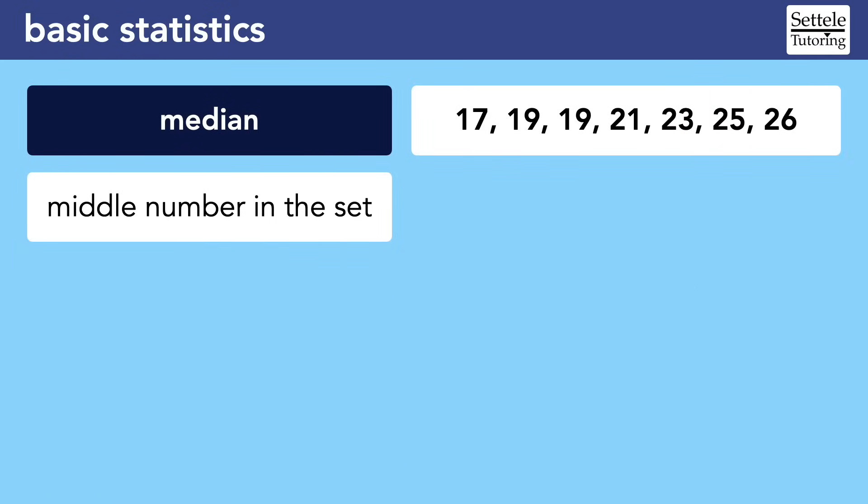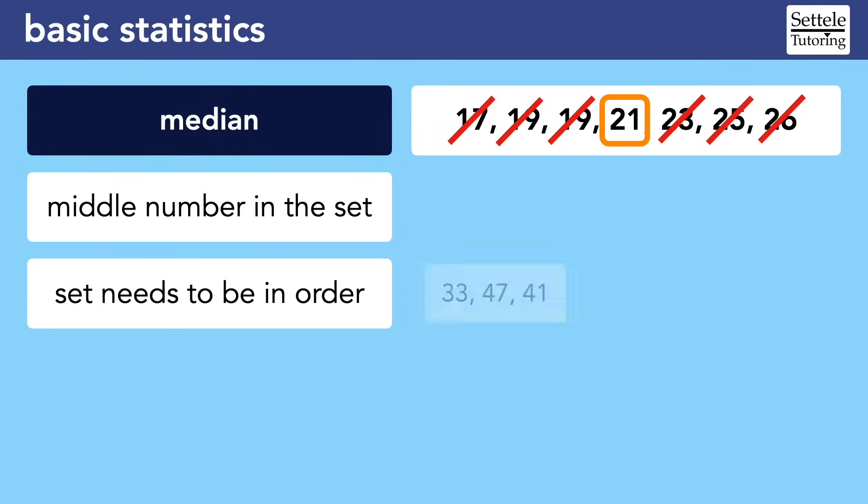Moving on, the median is the second most important statistical measure we'll see on the SAT. Basically, the median is the middle number of the data set. When you have the list, you can cross off one number from each side until you reach the middle. So in this case, the median is 21. But the set must be arranged in order from least to greatest. In this set of three numbers, the median is not 47 just because it happens to be the middle number in the list. We need to reorder the list to see that the actual median is 41. Jumbling the list is one of the SAT's most common traps for questions about the median.